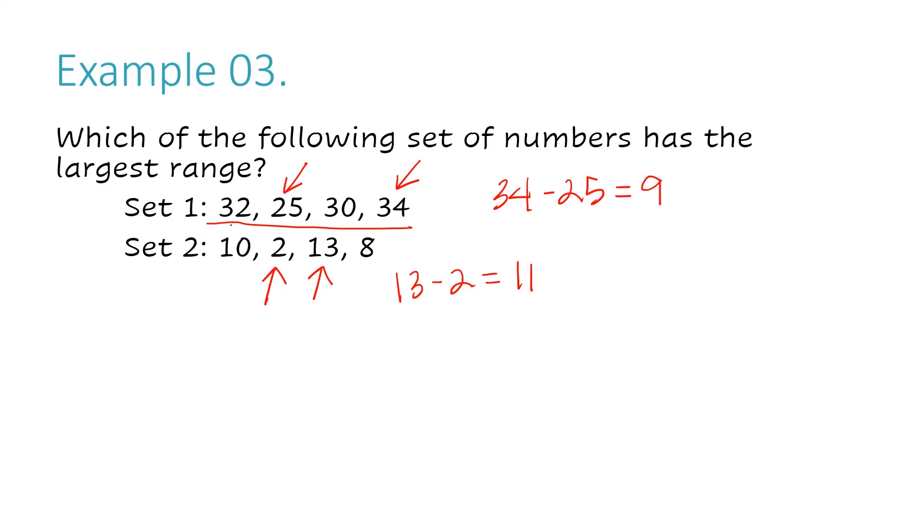Do not think, oh, the numbers in data set 1 are larger numbers, so that means it's going to have the larger range. No, that's not necessarily true. So in this case, you can see that this has a larger range. That means this has a longer space that it takes up on the number line. It goes across 11 notches on the number line. The first data set would only go across 9 notches. When I'm answering the question of which of the following data sets has the largest range, that would be set 2.